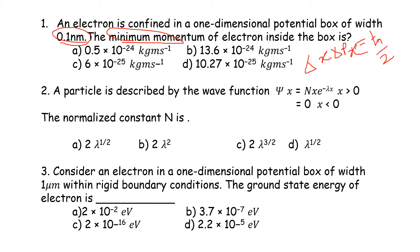Here Δx = 0.1 nm = 1×10⁻¹⁰ m. So Δpx = ℏ / (2 · Δx) = 1.05×10⁻³⁴ / (2 × 1×10⁻¹⁰) = 0.5×10⁻²⁴ kg·m·s⁻¹.